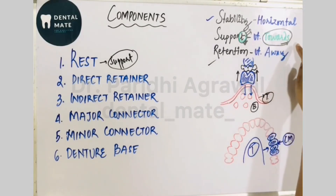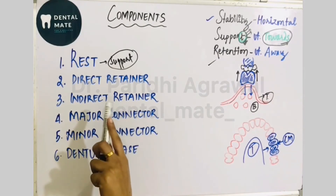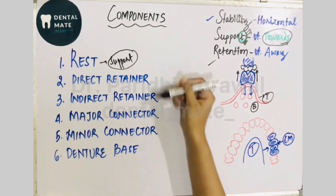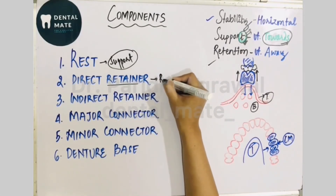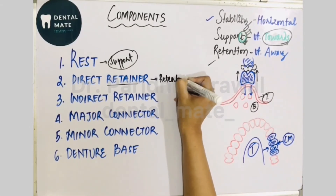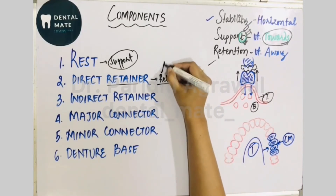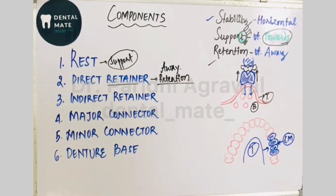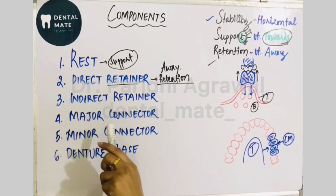The rest provides resistance to movement in the vertical direction towards the tissue. Next is the direct retainer, which provides retention — that is, resistance to movement away from the tissue. It resists the dislodgement of the prosthesis away from the basal seat tissue.